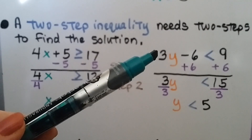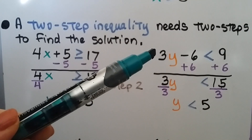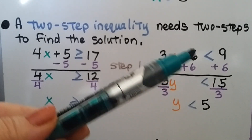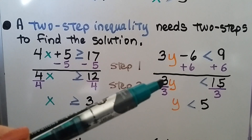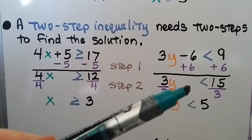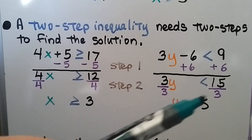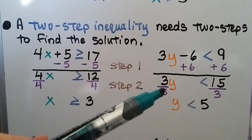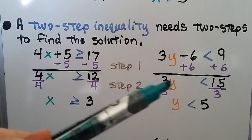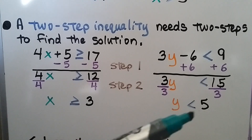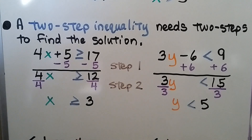For this one, we have 3y minus 6 is less than 9. Because we have a minus 6, we can do a plus 6 to create a zero pair here, and we get 3y is less than 15. We divide both sides by the coefficient 3, because that's multiplication when they're together. So we use division as the inverse. We get 1y is less than 5. That's a two-step inequality — it took two steps to find the solution.